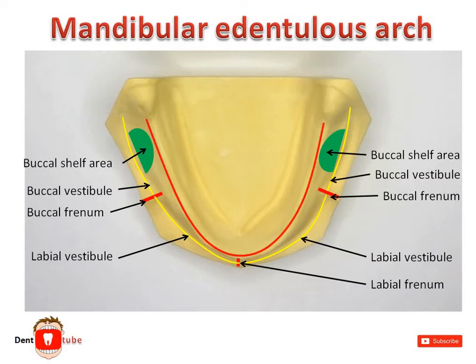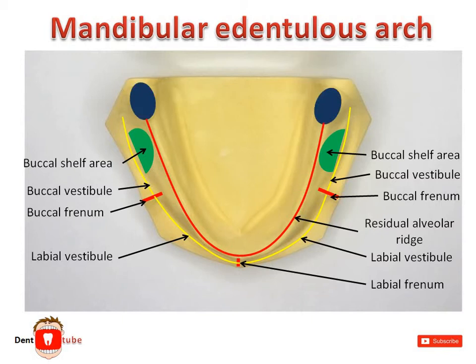The red line depicts the crest of the residual alveolar ridge. A pear-shaped pad-like structure that forms the posterior seal of the mandibular denture is the retromolar pad. It is a non-keratinized tissue with a collection of loose connective tissues with an aggregate of mucosal glands.